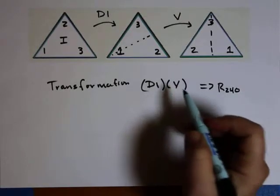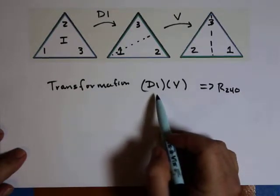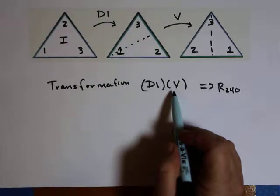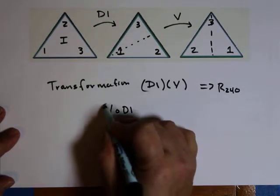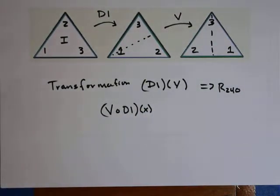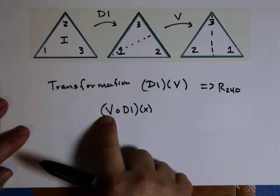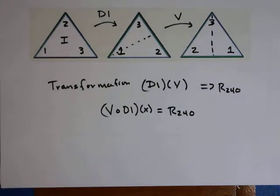This is clearly not multiplication. What we're doing is taking D1 and then performing the vertical reflection — so we call this V composed of D1 of X, where our transformations are functions of X. This is V ∘ D1 because in composition we do D1 first followed by V. So our operation for this group is composition.